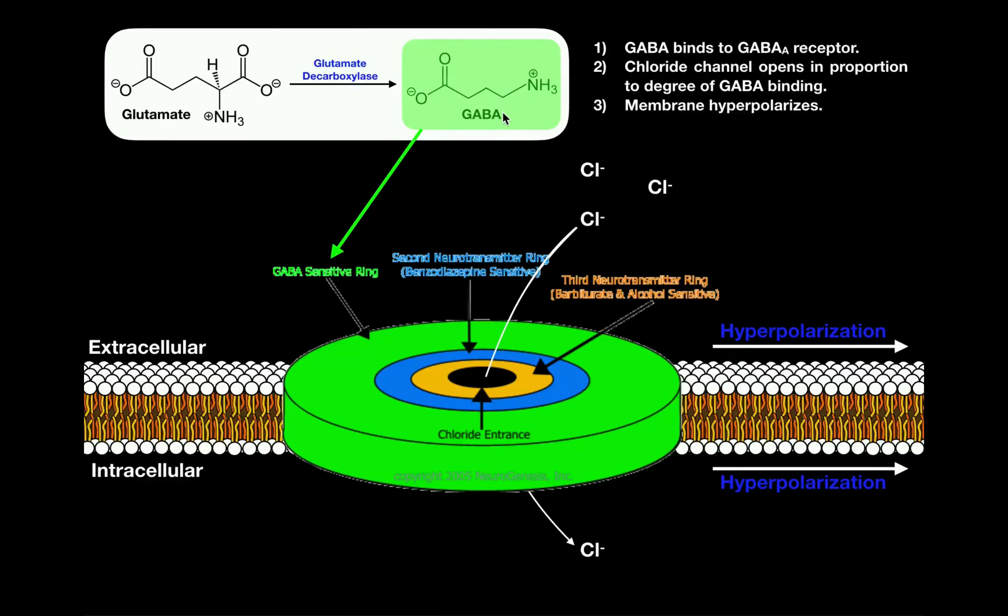Then that presynaptic neuron, if it's stimulated, can release GABA into the synaptic cleft. That GABA can diffuse across the synaptic cleft and influence the postsynaptic membrane via the GABA-A receptor, a schematic of which is shown right here.